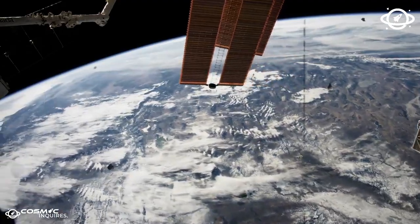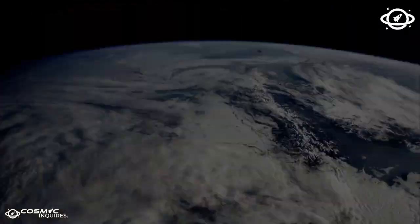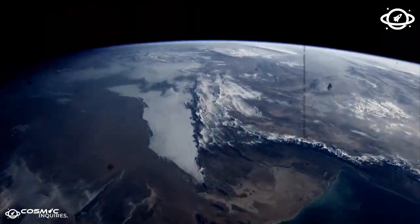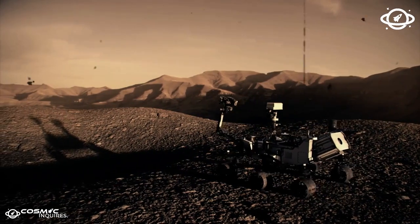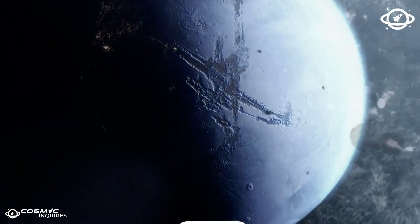Using its upcoming Long March 9 heavy lift rockets, China will assemble a 1 km wide solar array in geostationary orbit, beaming continuous energy back to Earth via microwaves.